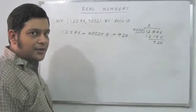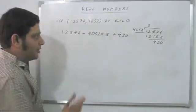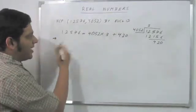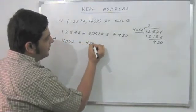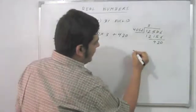As you can see, the remainder is not 0, so I need to apply the process again. When I apply the process again with 4052, the smaller number and 420, the remainder, I will again check and divide.